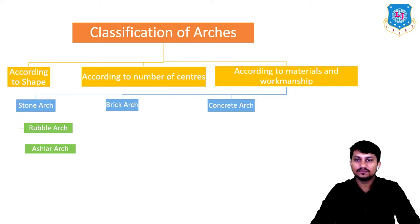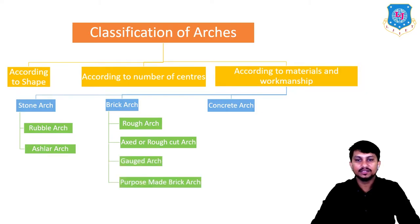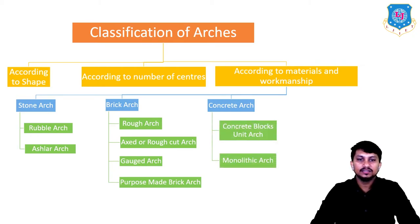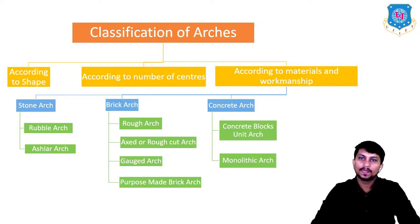In stone arch there are various types like rubble arch and ashlar arch. In brick arch there are mainly four types: rough brick arch, axe-cut brick arch, gauged brick arch, and purpose-made brick arch. In concrete arches there are two types: concrete block unit arch and monolithic concrete arch.